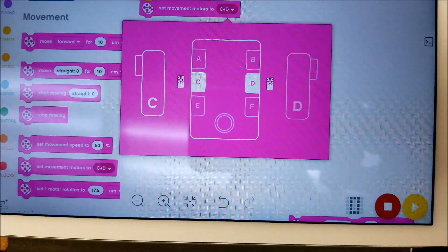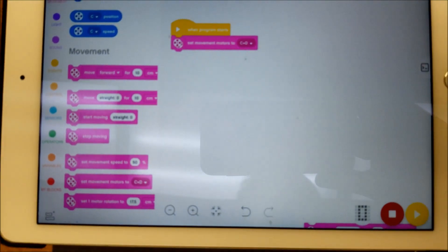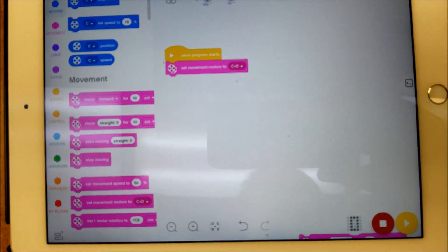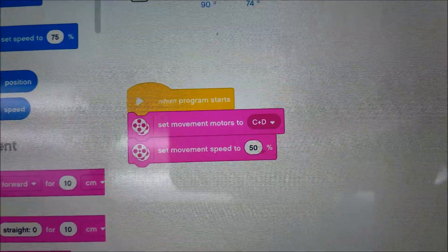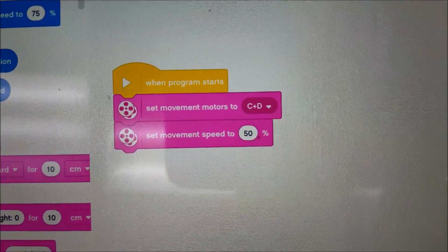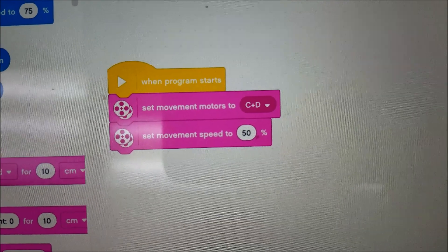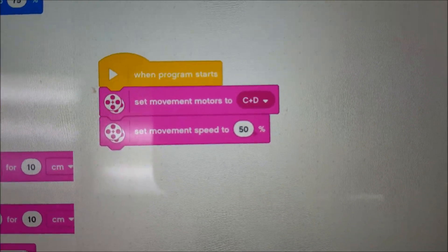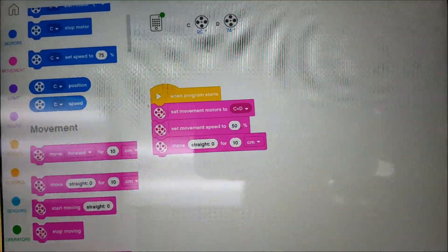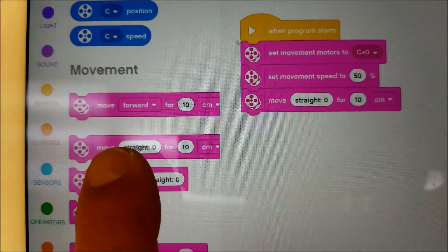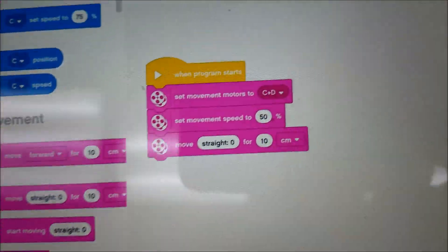So we have C and D, which is good. Now we're going to set the movement speed. There's your 50 percent which it will default to, which in this case right now I'm fine with.